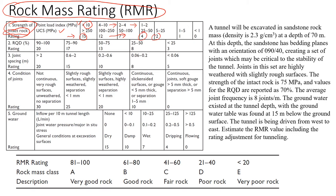The same is valid for unconfined compressive strength. If we have a rock with very high UCS, we're going to have a very high rating. When UCS is pretty low, the rating will be too small.